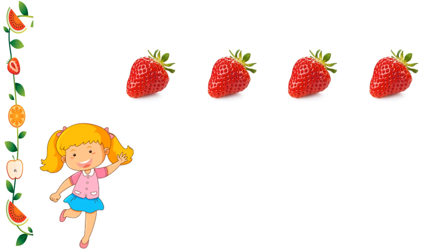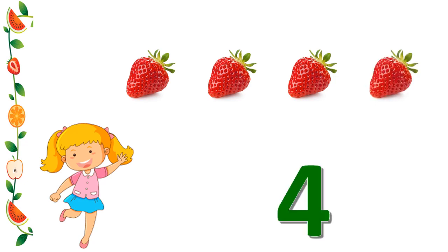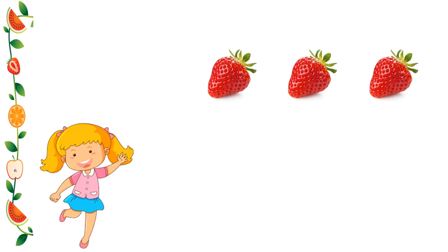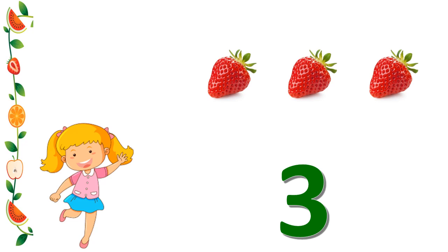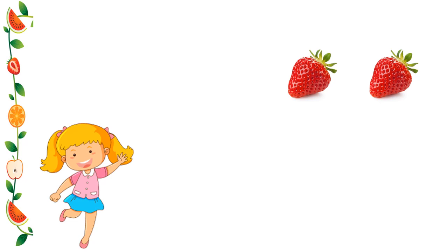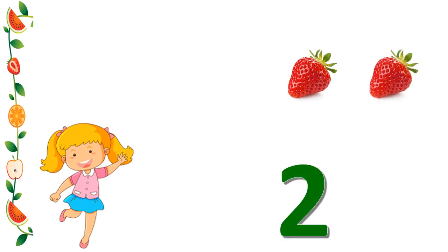Now let's understand the concept of zero with another example. Here we have a little kid who loves strawberries. Let's count the number of strawberries: one, two, three, four. So we have four strawberries. The little one ate one strawberry. Let's count: one, two, three. So there are three strawberries left. Then she ate another strawberry: one, two. So there are two strawberries left.